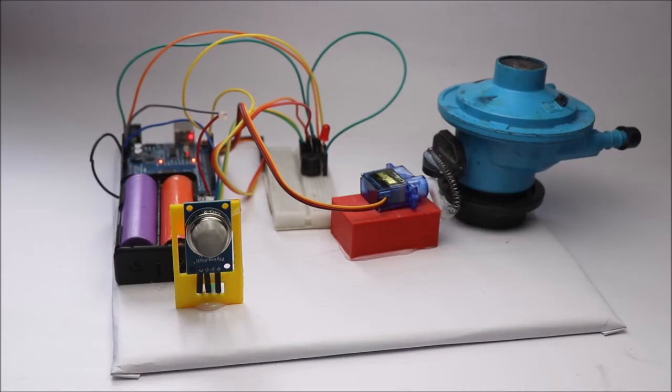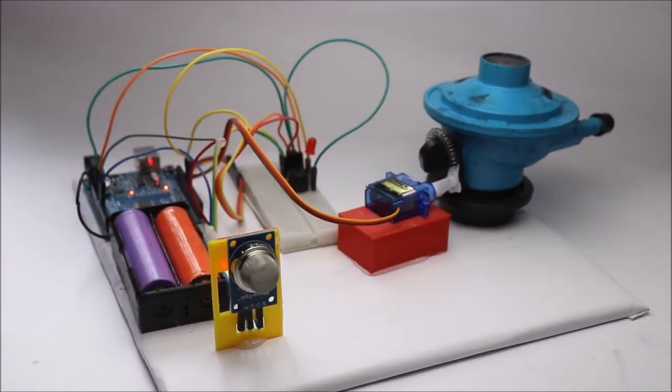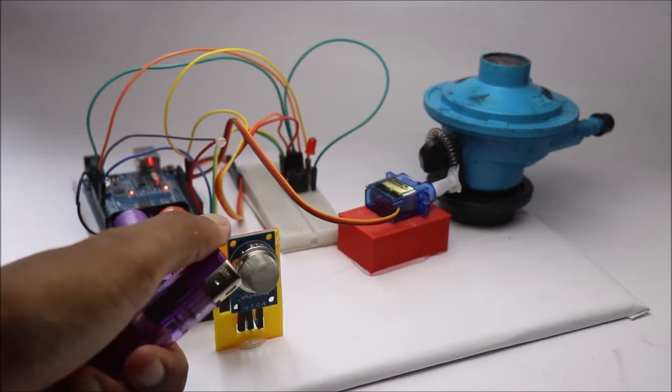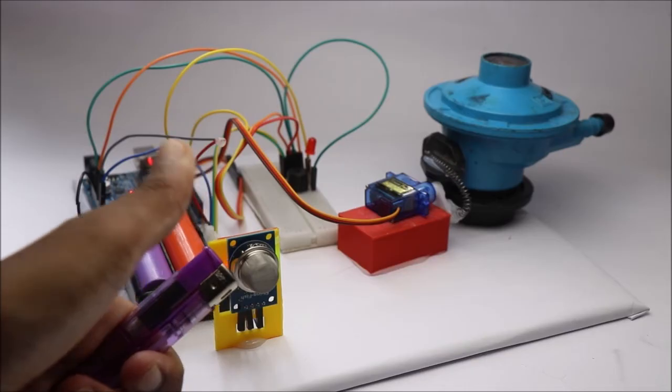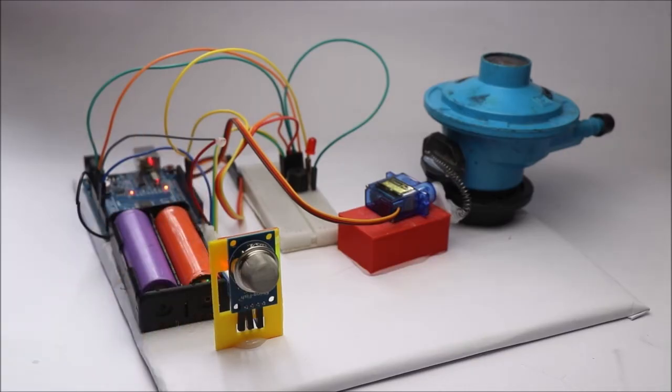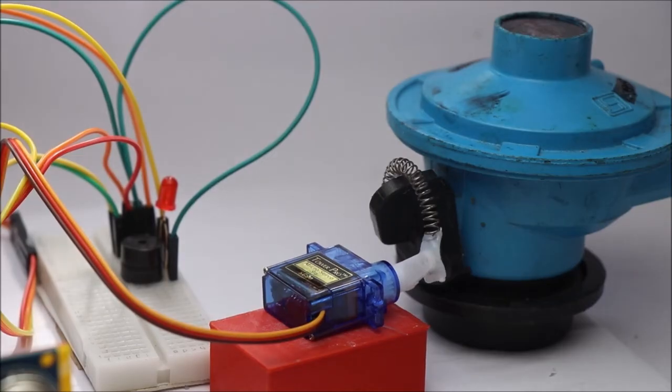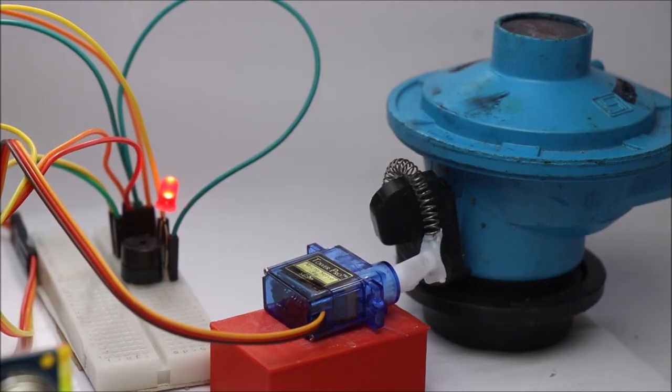Now to turn off the gas supply, the servo horn moves the regulator switch to off the gas supply. That was all about this project. If you have any questions, ask me in the comments. Thank you for watching.